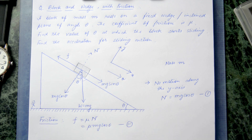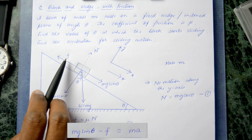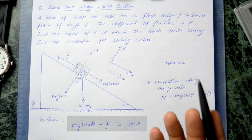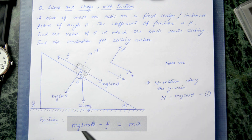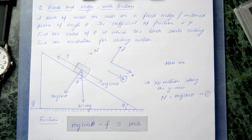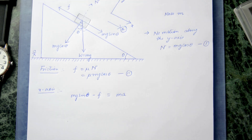Looking at motion along the x-axis: motion will only occur when mg sinθ is greater than f. If mg sinθ equals f, there is no motion. So the net force is mg sinθ − f, and this net force causes acceleration. Applying Newton's second law: mg sinθ − f = ma.